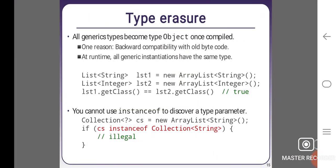Type erasure. All generic types become type Object once compiled. One reason: backward compatibility with old bytecode. At runtime, all generic instances have the same type.